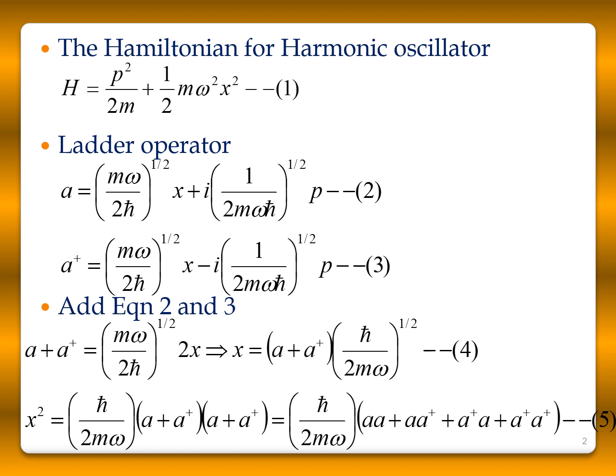So x² can be written as (ħ/2mω)(a + a†)(a + a†), since x is an operator and we must multiply operator-fashion. Expanding, x² = (ħ/2mω)(aa + aa† + a†a + a†a†). Note that aa† ≠ a†a because these are operators.